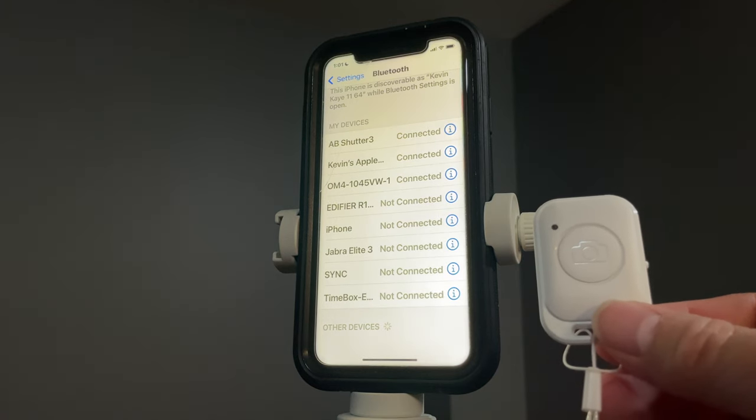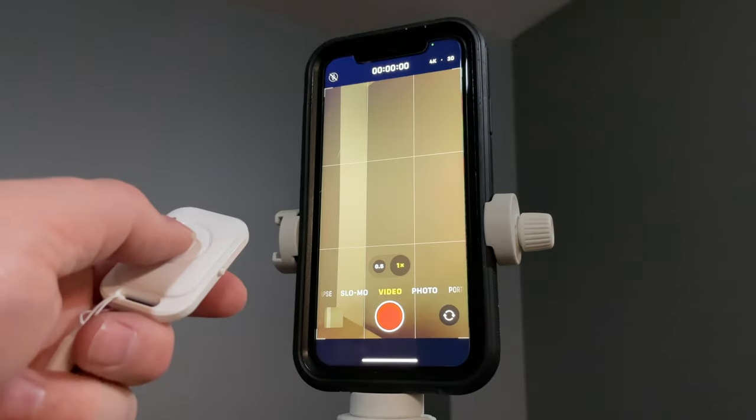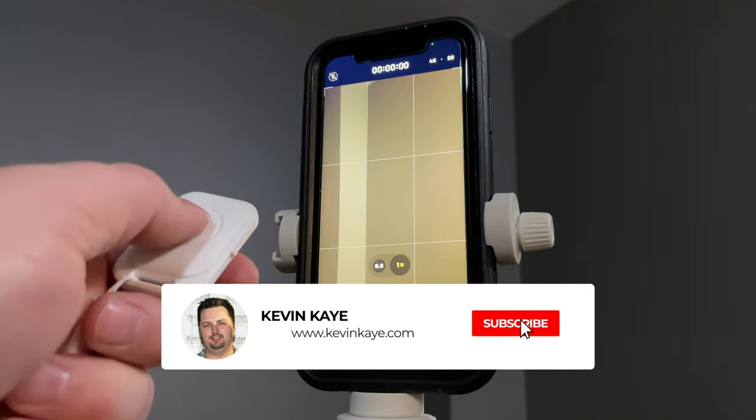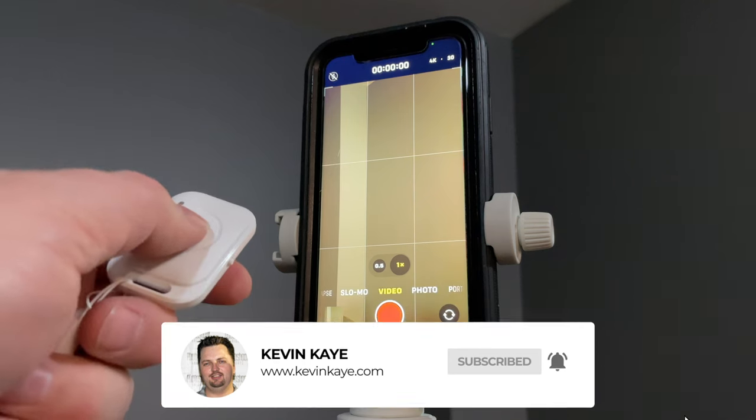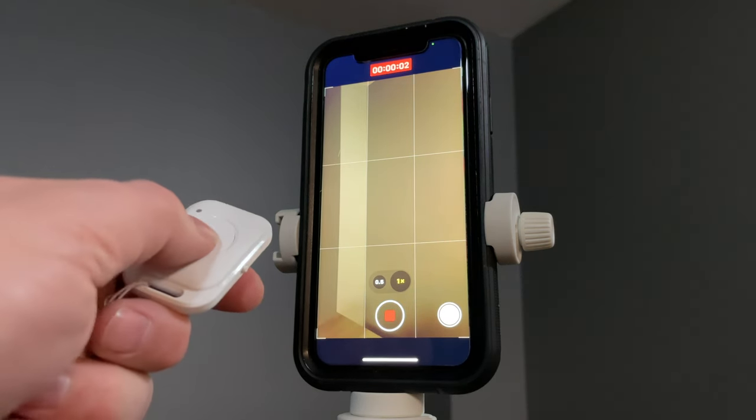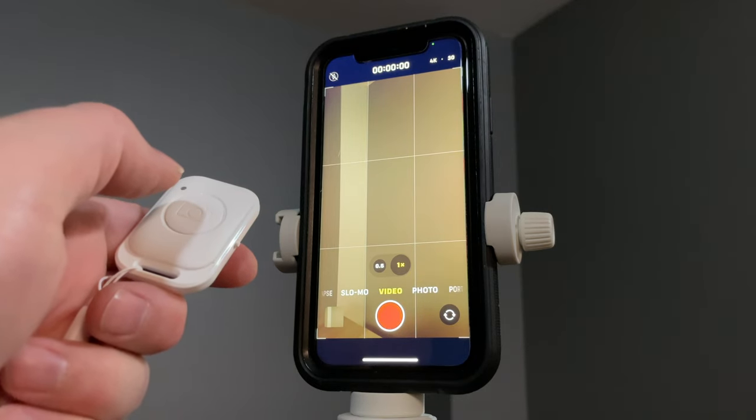This Bluetooth remote is literally just for either snapping pictures or starting and stopping the video recording. But it's this easy. One press starts the recording. Another press makes it stop.